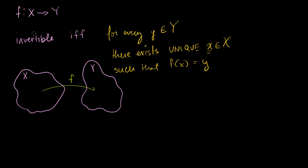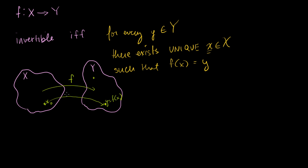We know what invertibility means. If it's invertible, then for every y that's a member of our codomain, there exists a unique x such that f of x is equal to that y. If we take some x-naught, f of x-naught equals y — that y maps to that point. It wouldn't be invertible if you had two members of X mapping to the same y, because that would break the unique condition.